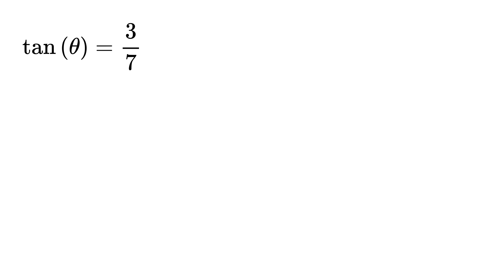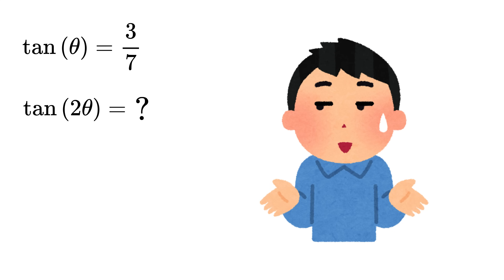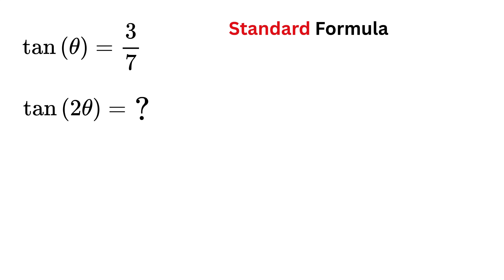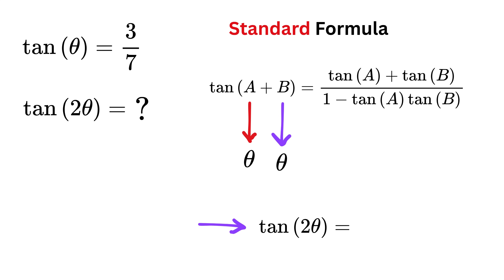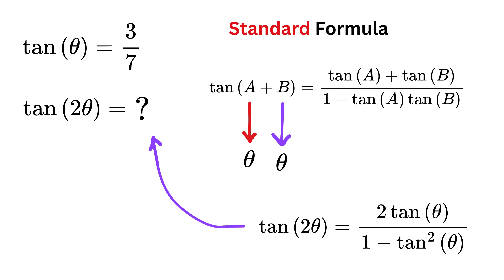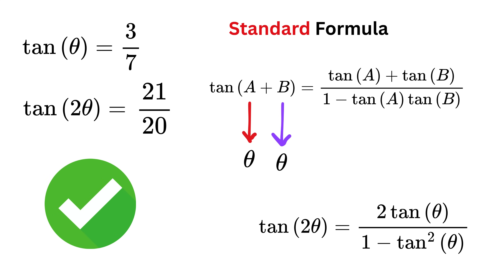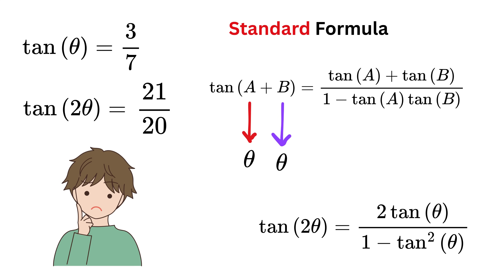We are given the value of tan of theta as 3 over 7, and using that, we need to find the value of tan of 2 times theta. Normally you would use the standard trigonometric formula for tan A plus B, and substitute both A and B as theta to get tan of 2 theta, which turns out to be equal to 21 over 20. And we are done. But here's the catch.